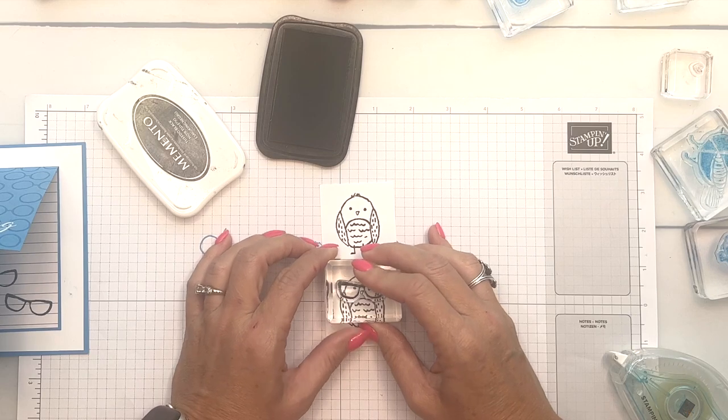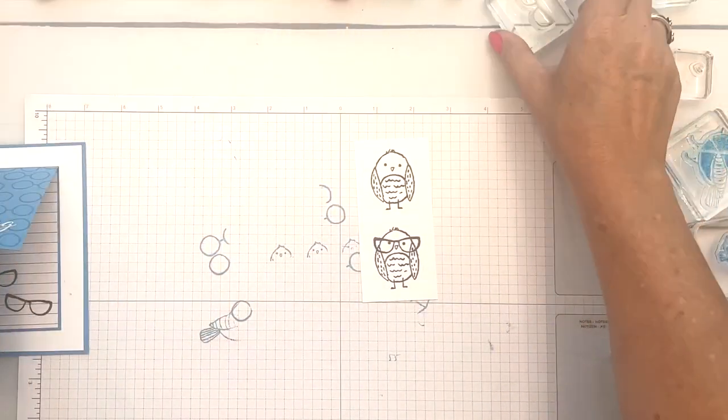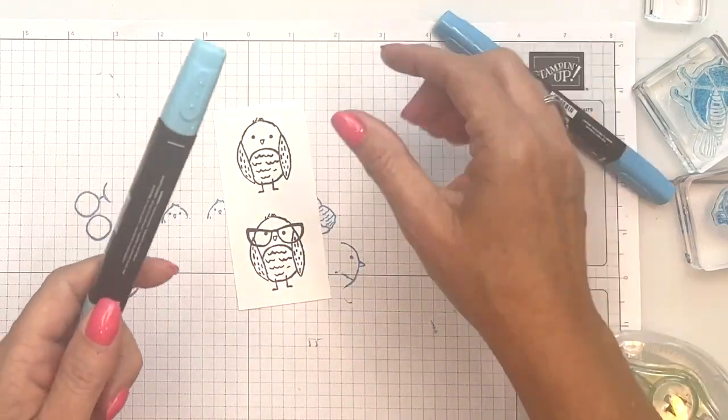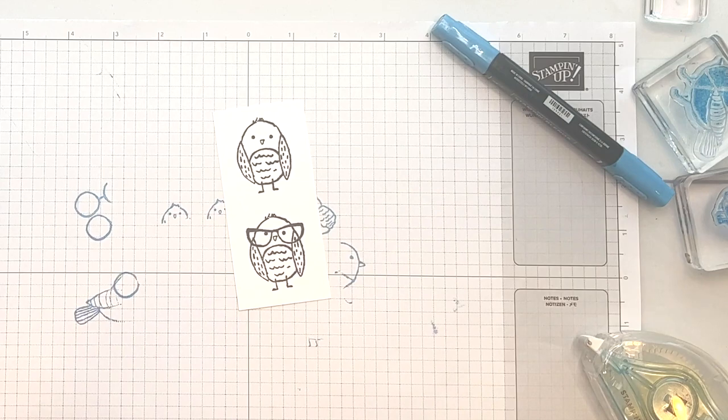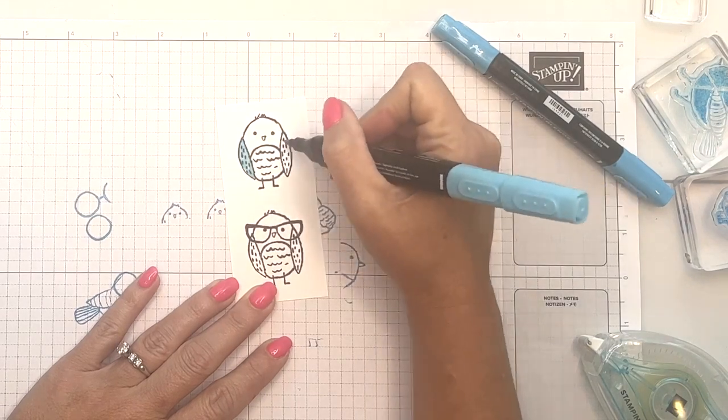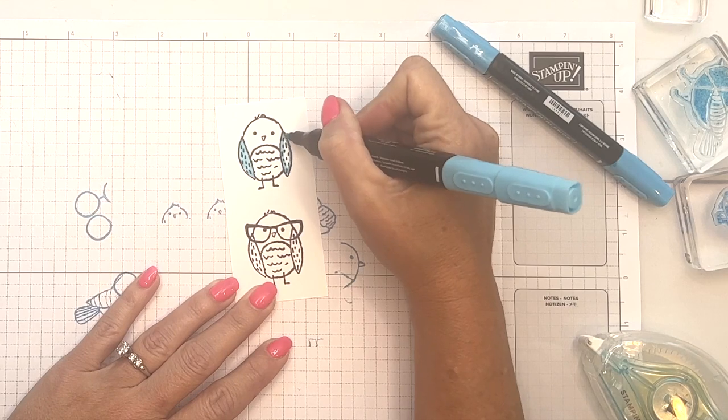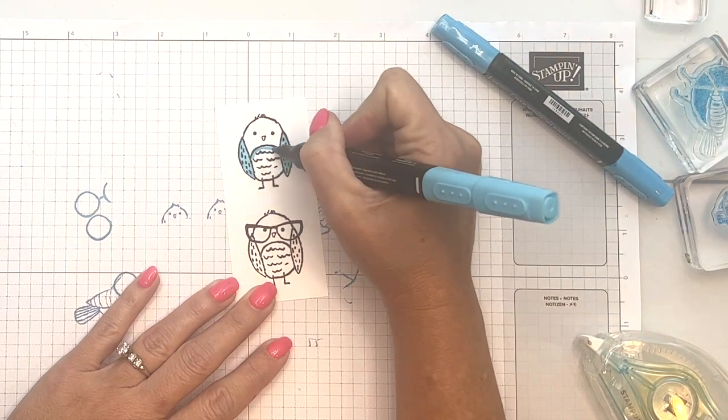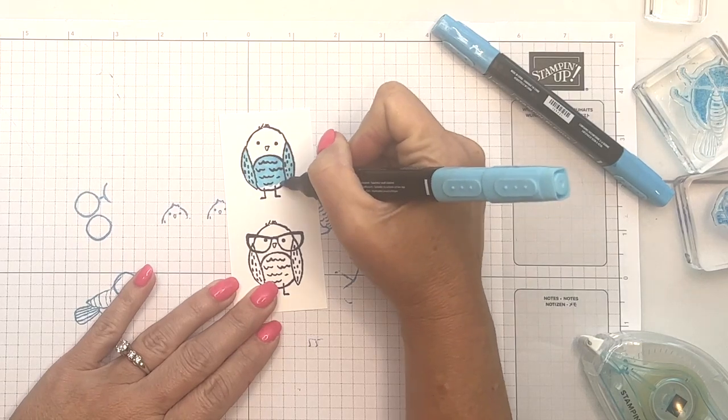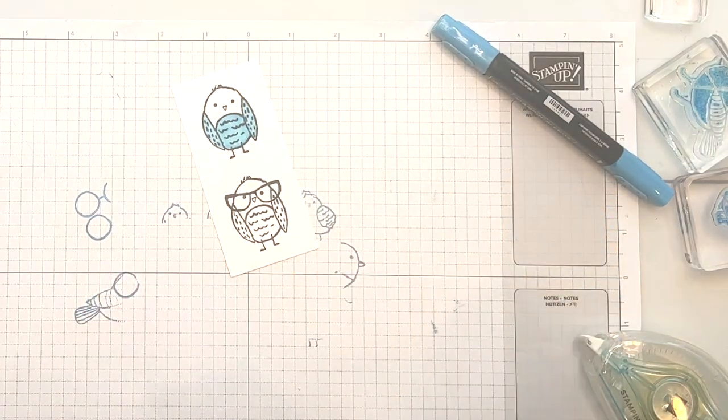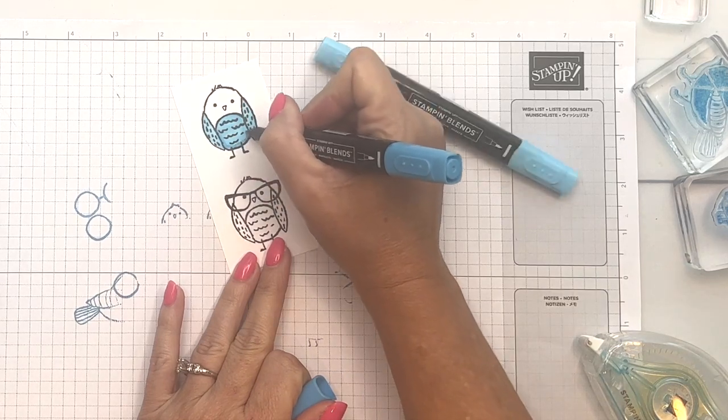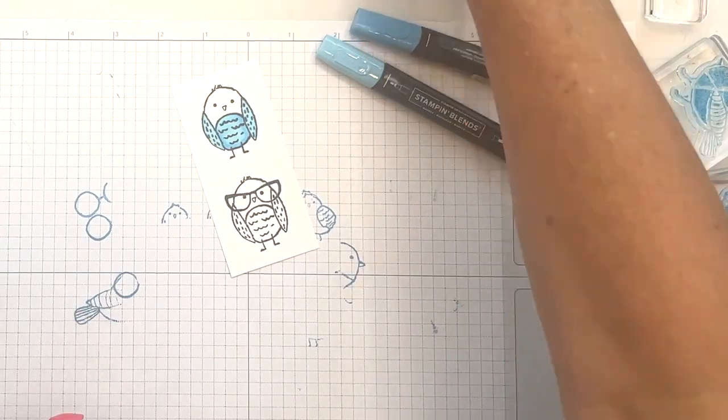Stamp your glasses just like that and now we're going to color this bird. This is the one we're going to spend all the time coloring. Down here we're just going to color inside the glasses. I have Tahitian Tide Stampin' Blends. I'm going to start with my light and add some color around the edges, then fill inside the middle so it's not too dark. Now take your dark and add a little bit of dark around to give him some dimension.